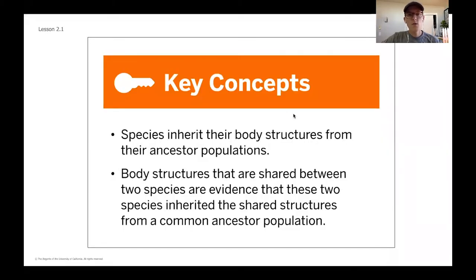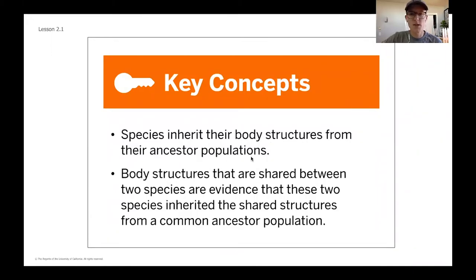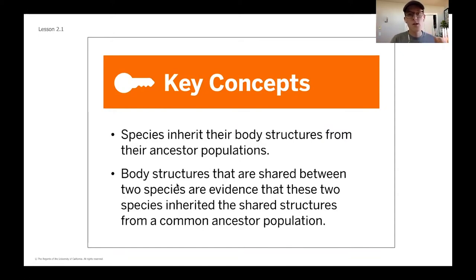To review what we learned in chapter one, we started to talk a lot about similarities that we saw between the body structures of different species. We said that species are going to inherit body structures that are passed down from ancestor populations — meaning populations of a specific species that lived before the current one. We also learned that body structures shared between two species shows that at some point those species shared a common ancestor.